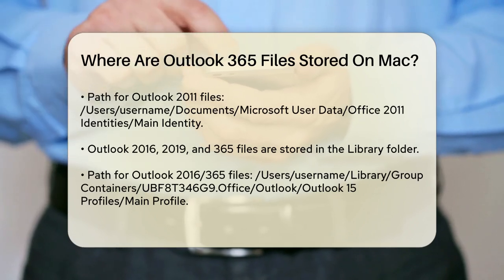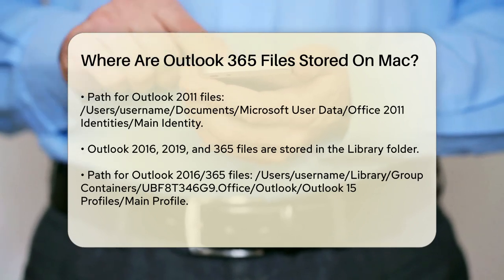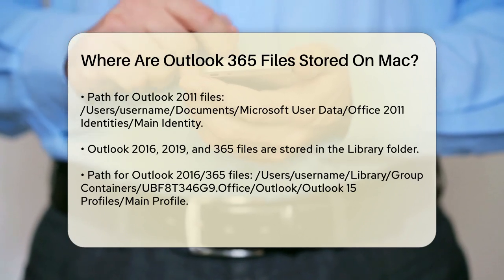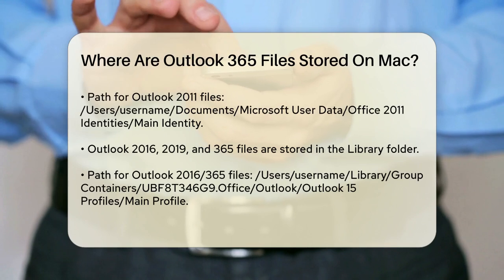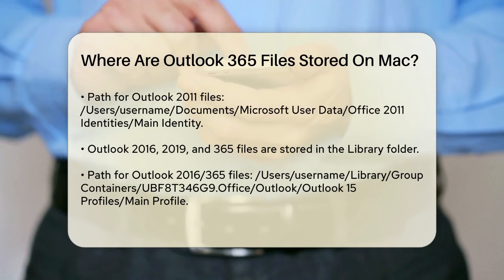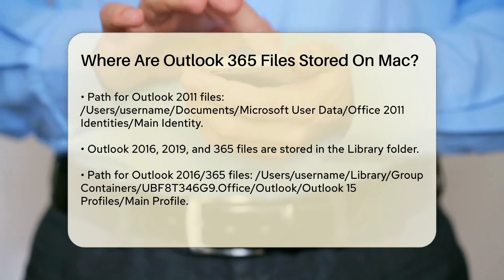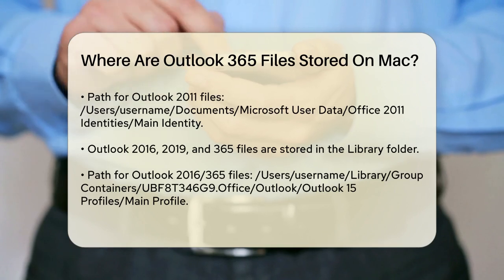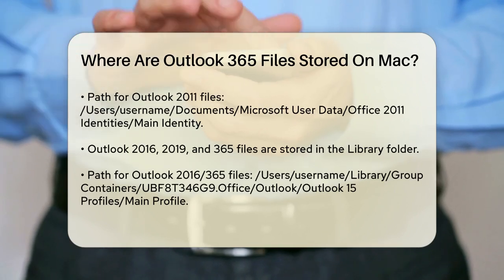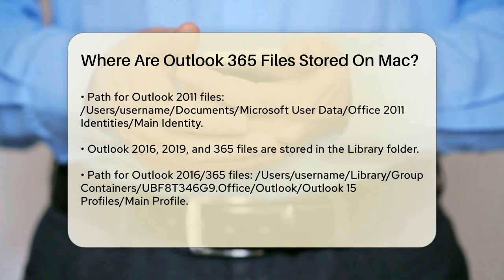If you're using Outlook 2016, 2019, or Outlook 365, the files are stored in a different location. You'll need to navigate to the Library folder. The exact path is: /users/username/libraries/group containers/ubf8t346g9.office/Outlook/Outlook 15 profile/main profile.